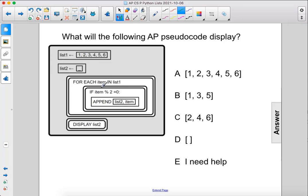So 1 is odd. So if item modulus 2 equals 1, we're not going to do anything, so we're not going to add that to list 2.